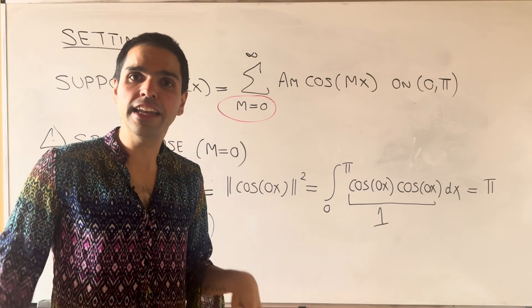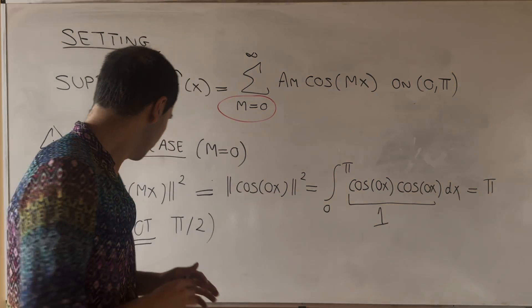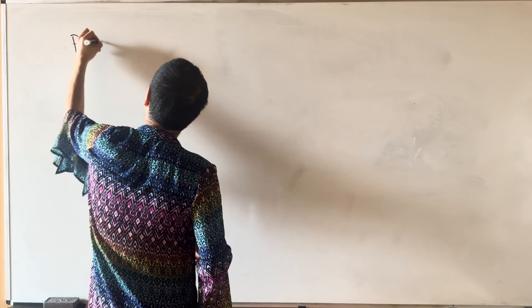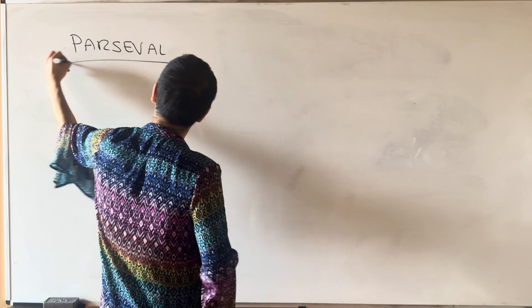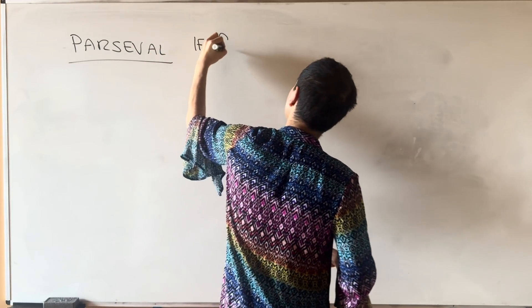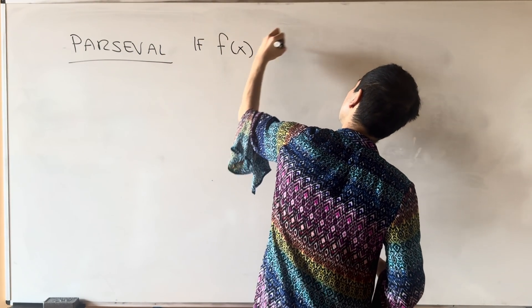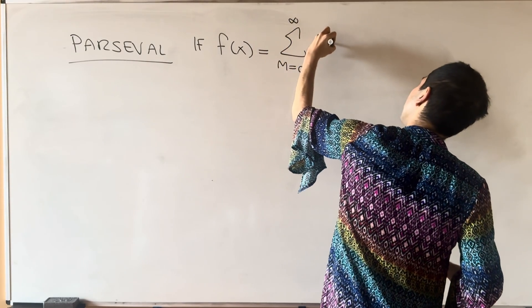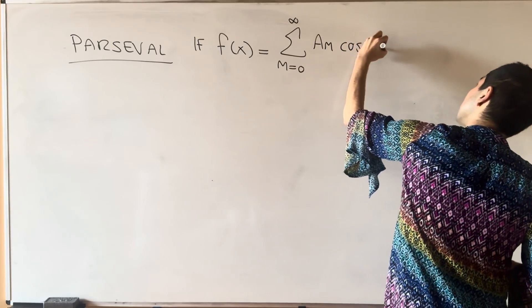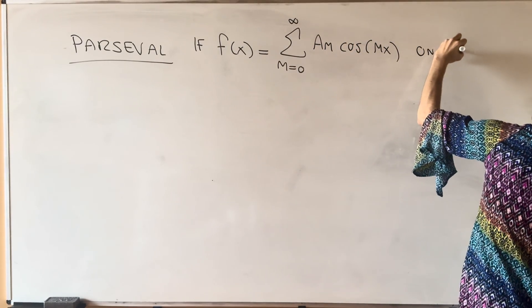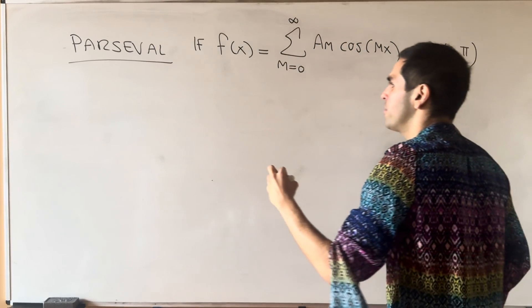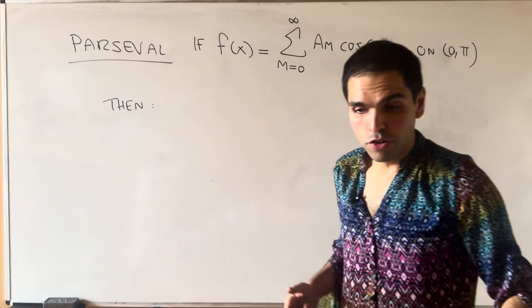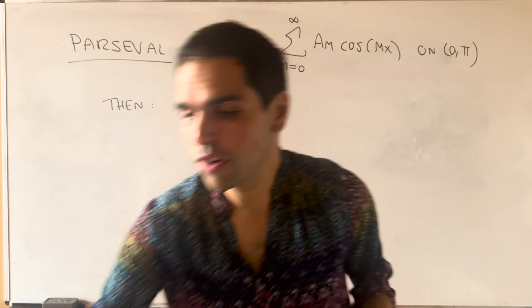And we end up getting the following Parseval identity. So here, Parseval's identity becomes the following. If your function is a cosine series, so sum from m from 0 to infinity of a_m cosine mx on the interval 0 comma pi, then, once again, you just have to be careful of the a_0 term.